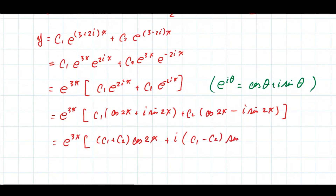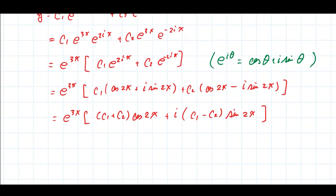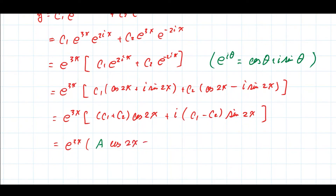Applying Euler's formula: c₁·e^(2ix) = c₁(cos 2x + i sin 2x), and c₂·e^(-2ix) = c₂(cos 2x - i sin 2x). Collecting cosine terms: (c₁ + c₂)cos 2x, and sine terms: i(c₁ - c₂)sin 2x. Let A = c₁ + c₂ and B = i(c₁ - c₂), so the bracketed expression becomes A·cos 2x + B·sin 2x.